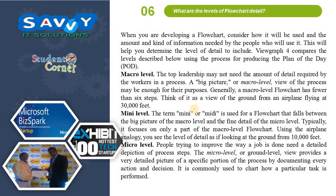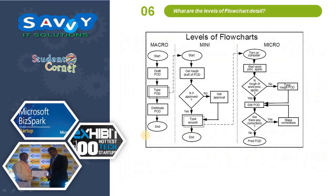What are the levels of flowcharts? When you are developing a flowchart, consider how it will be used and the amount and kind of information needed by the people who will use it. This will help you determine the level of detail to include. There are three levels: macro level, mini level, and micro level. Macro shows the whole view, mini provides a little more detail, and micro provides very detailed information.